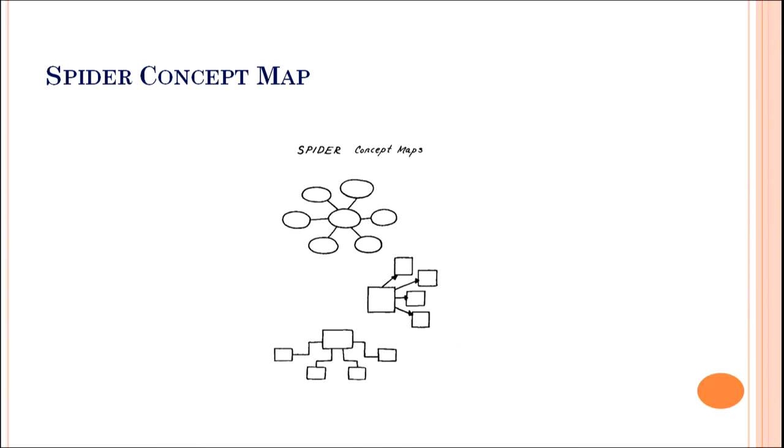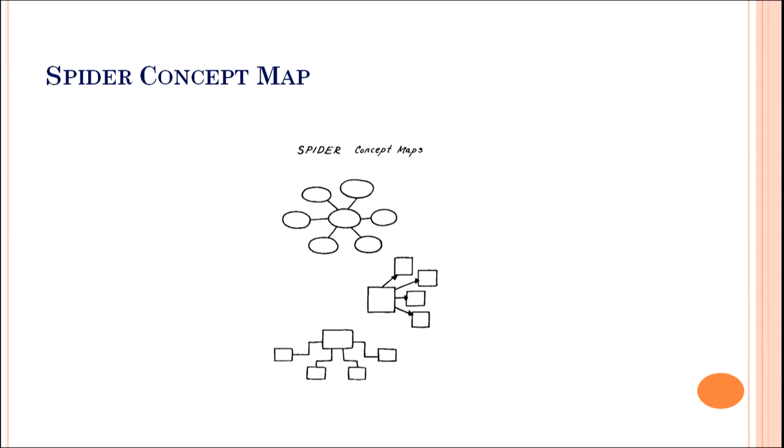Now let us talk about some types of concept maps. First is the spider concept map. In the spider concept map, the main idea is given not at the top but in the middle, and out of this main idea branch out various ideas. The main box, which is bigger than the other boxes, represents the main idea. The spider concept map is very simple to make — you write the main idea in the middle and the sub-concepts in the other boxes.